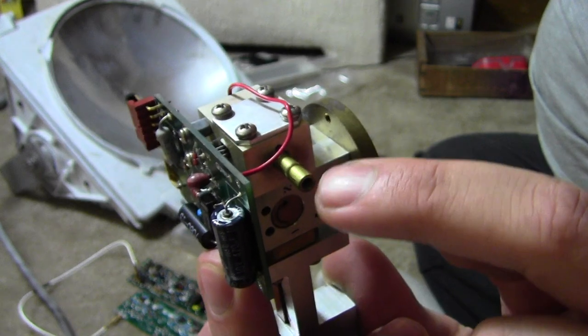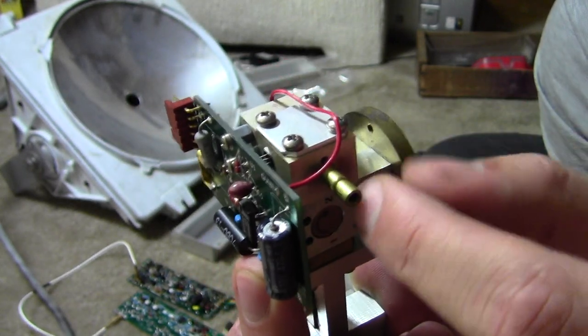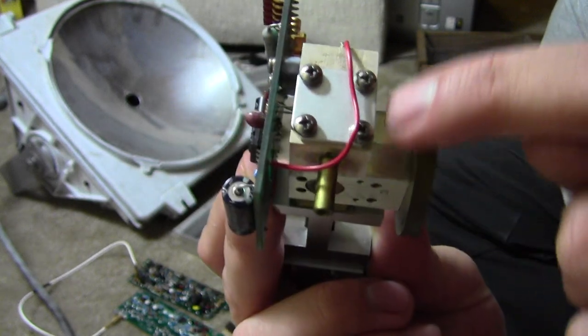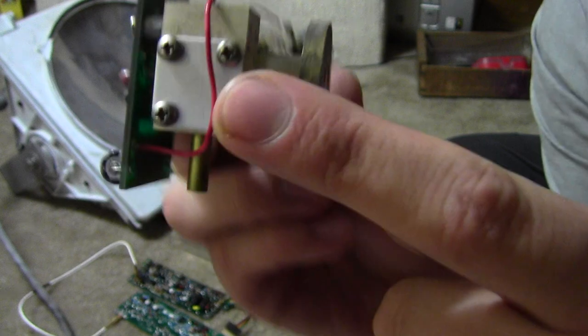This copper tube right here has a ferrite slug inside of it that you can then screw in or out to change the exact size of this cavity to change the oscillation.